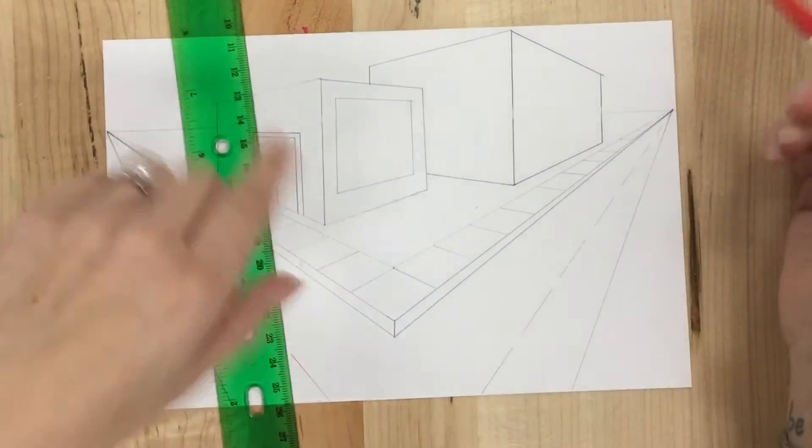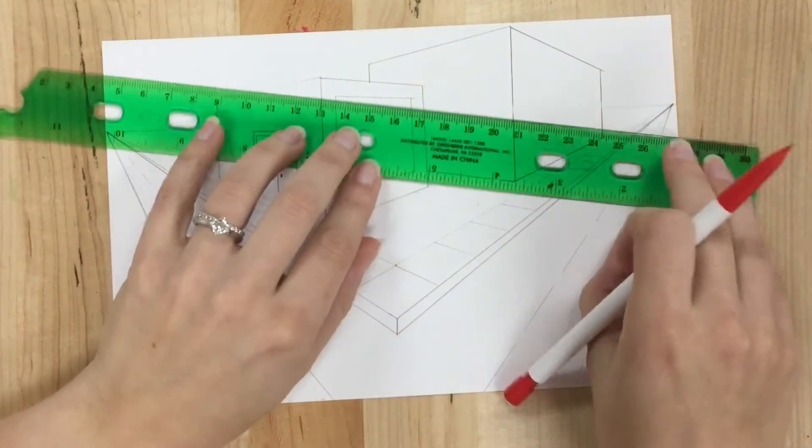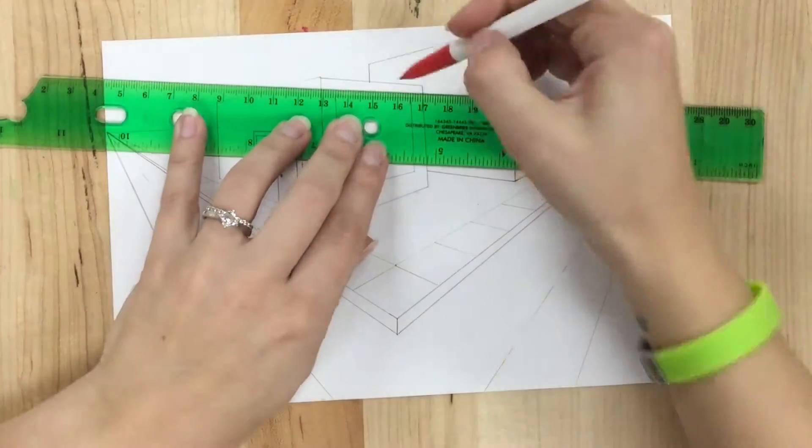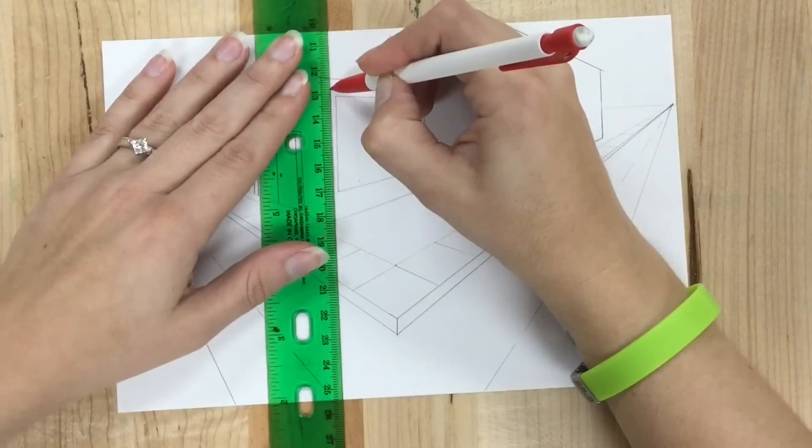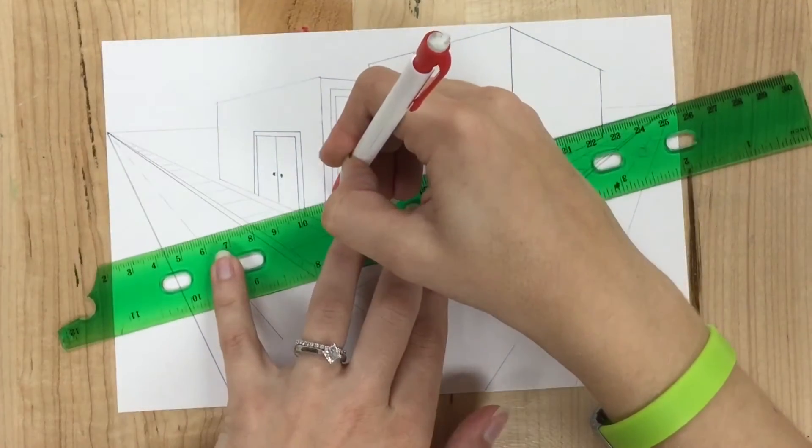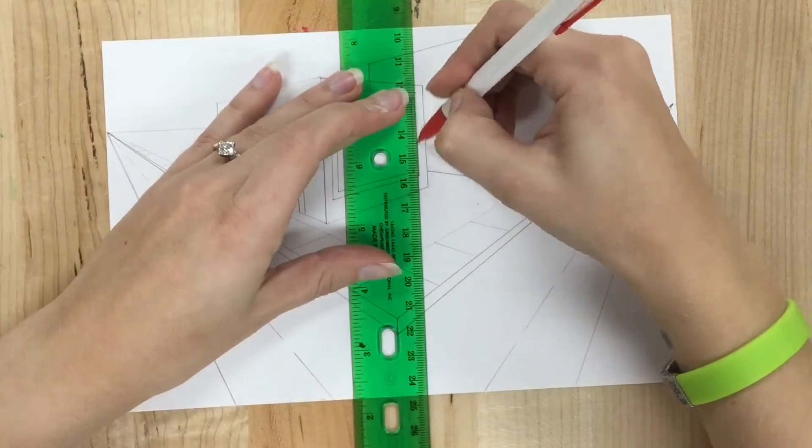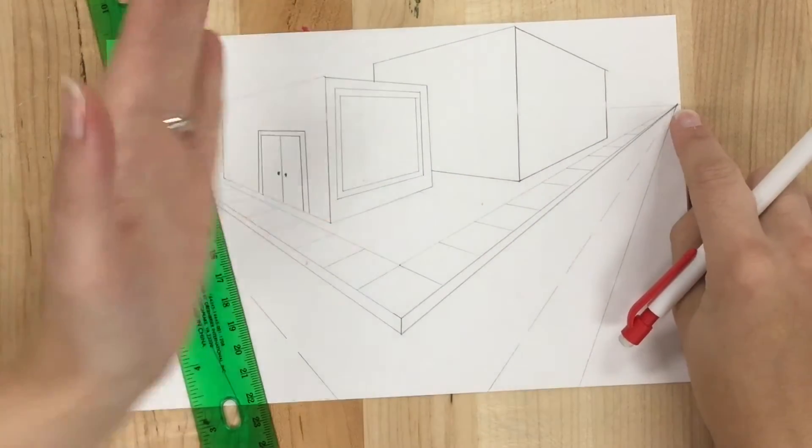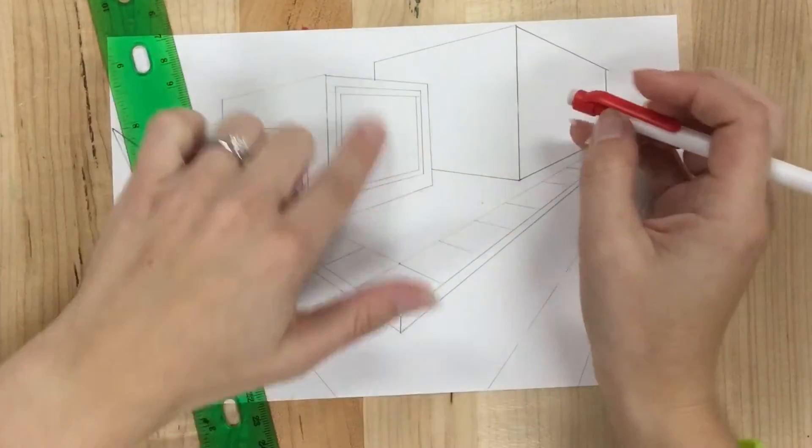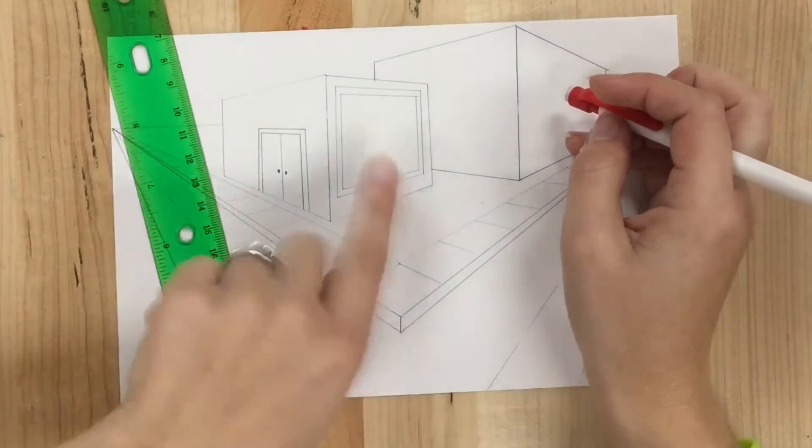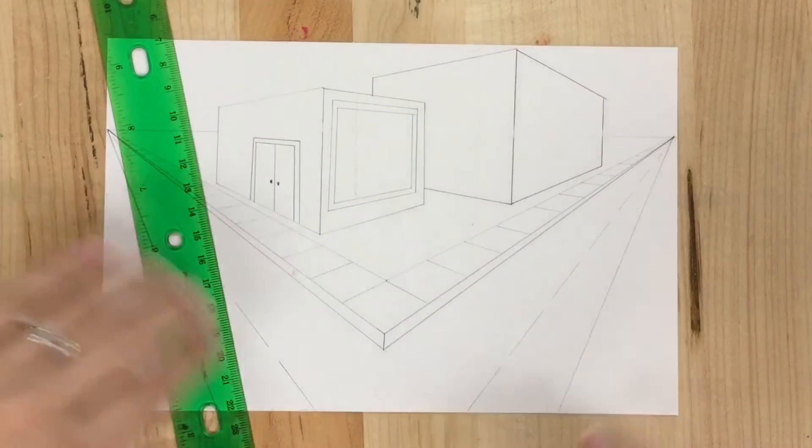If I want to put the frame around it, I'm going to do the same thing again, just a little bit away from the edge. Top and bottom go to my right vanishing point. Left and right are parallel. Now I can draw whatever is inside the building when I go in to add my details.